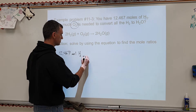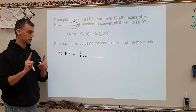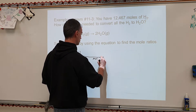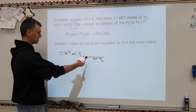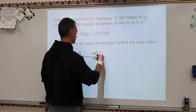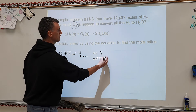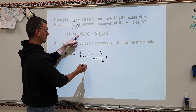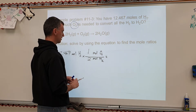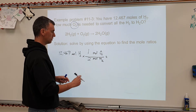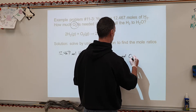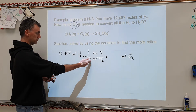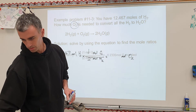The next thing is to set up a conversion factor — that's always going to be there. Remember: always set up units first; don't start with numbers, that's how people mess up. Put moles of H2 on the bottom so it can cancel. They ask for O2, so put moles of O2 on top. Looking at the balanced equation: 1 mole of O2 and 2 moles of H2. So it's the given times 1, divided by 2, rounded to 5 sig figs.